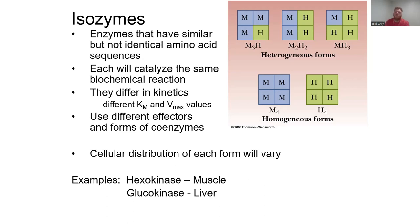Isozymes are enzymes that have similar but not identical amino acid sequences. Each will catalyze the same biochemical reaction. They differ in their kinetics. They have different KMs and they have different Vmaxes. What I want you to know right now about KM and Vmax is that these are known as kinetic parameters. Basically what they do is they measure how fast an enzyme catalyzes a reaction, which is your Vmax. And KM is a measure of affinity of an enzyme for its substrate. Different isozymes will use different effectors and forms of coenzymes. The cellular distribution of each will vary as well.